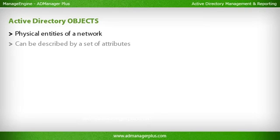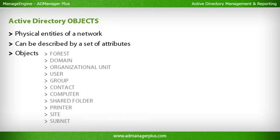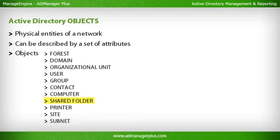Active Directory objects are the physical entities of a network and can be described by a set of attributes. Objects include: forest, domain, organizational unit, user, group, contact, computer, shared folder, printer, site, and subnet.